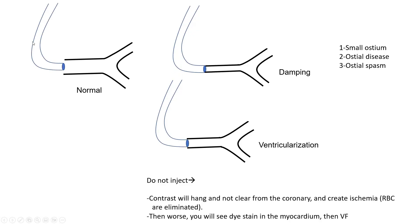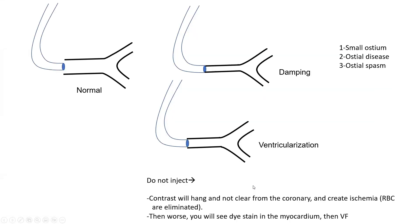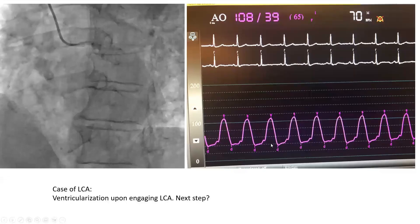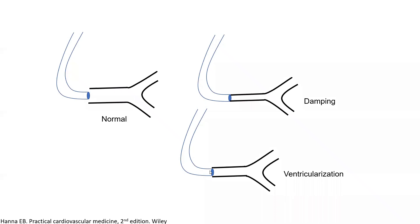Normally we have our catheter in a big ostium larger than the catheter and we will have a normal aortic pressure on the hemodynamics. But if you're in a small ostium, you get damping where the pressure becomes flat. Or if you're not fully occlusive but somewhat occlusive, you get what we call ventricularization — the pressure looks like a ventricular pressure — because your wedged catheter is seeing the downstream myocardium, which you will stain if you inject. It's like doing a pulmonary capillary wedge pressure — you see the LA pressure downstream.